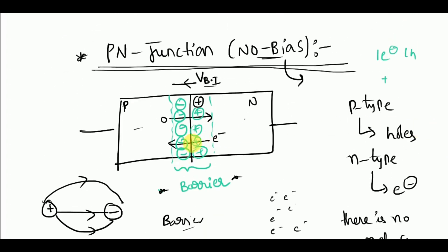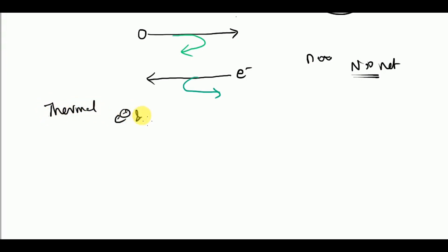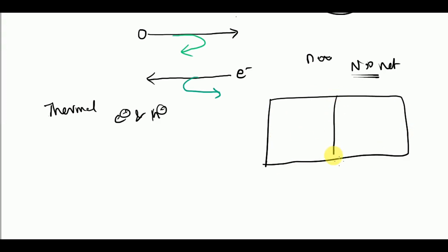Why during the equilibrium case is there no net current is the next thing to know. Due to thermal generation there is always an electron-hole pair generated in the device. In a PN junction, you have a depletion region where there are no mobile carriers — only immobile ions — which is why we call it the depletion region.